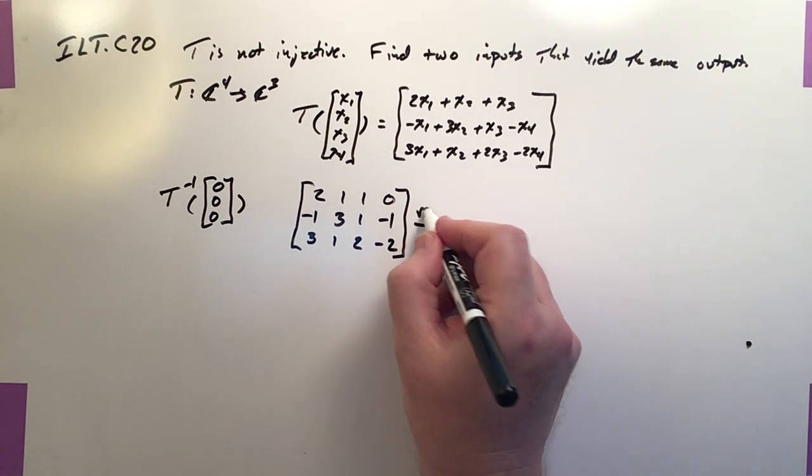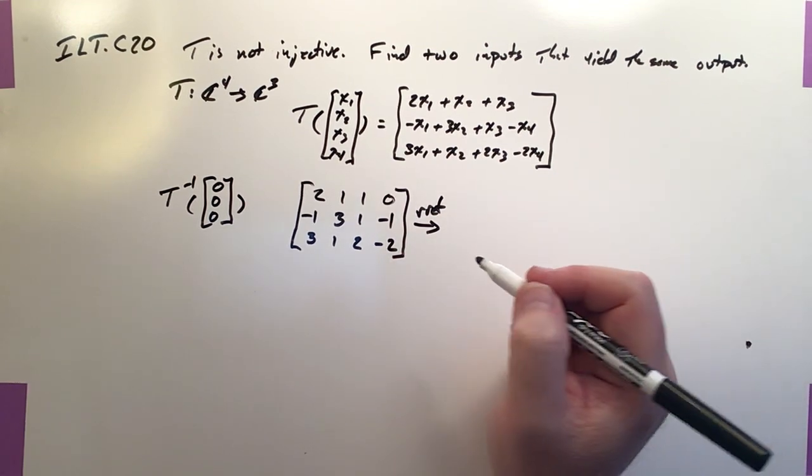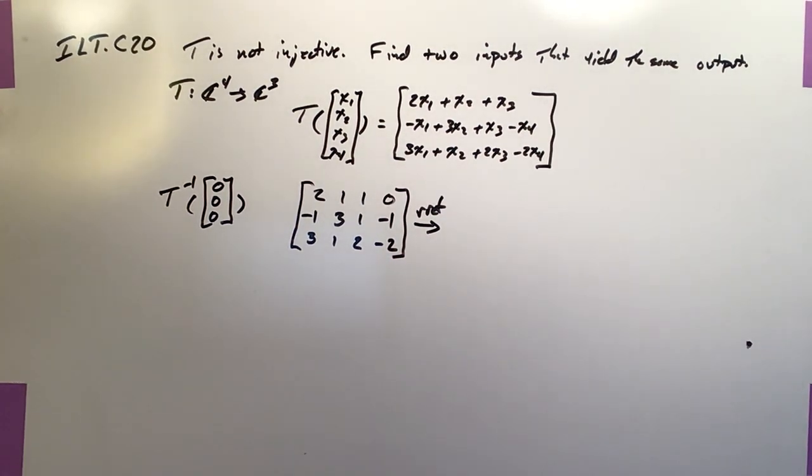And of course, when I RF this guy, we're actually going to need another row. Because the technology doesn't like to do matrices that aren't square when it does RFs.